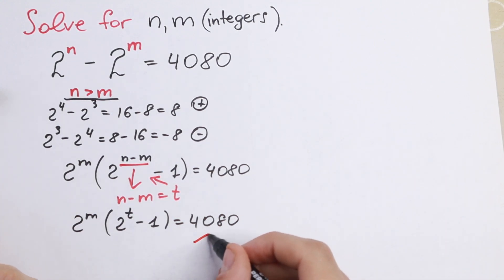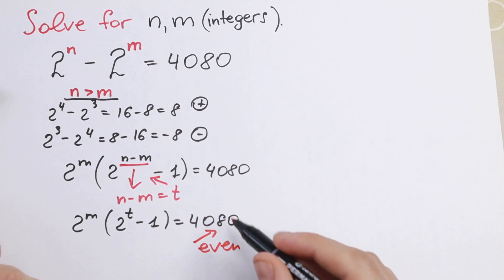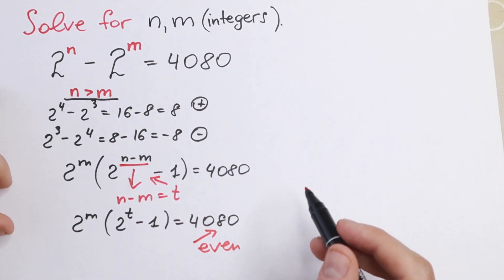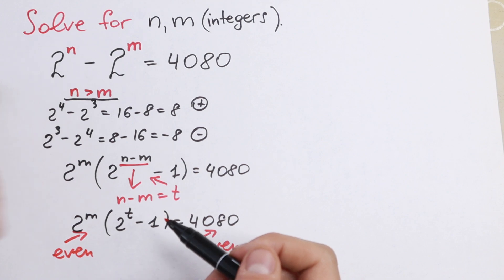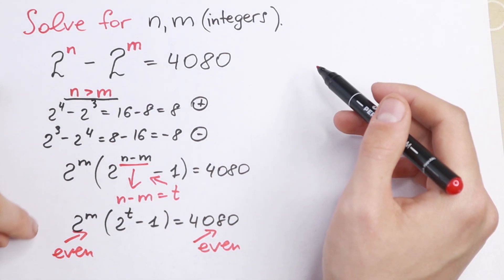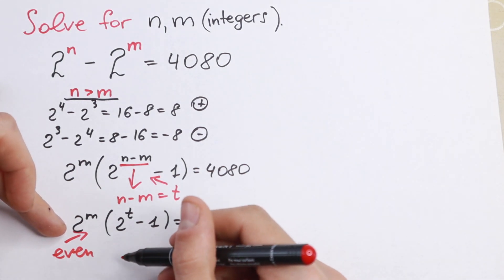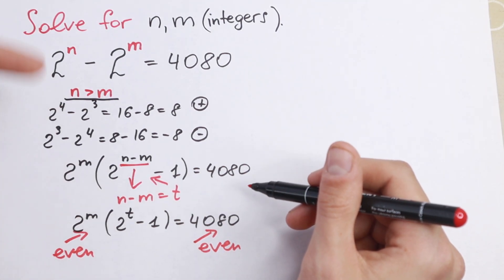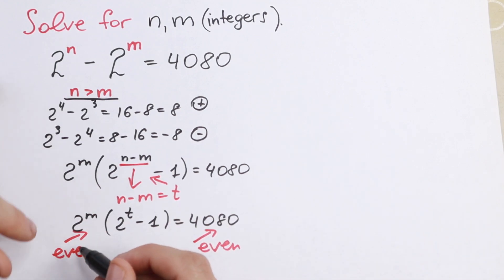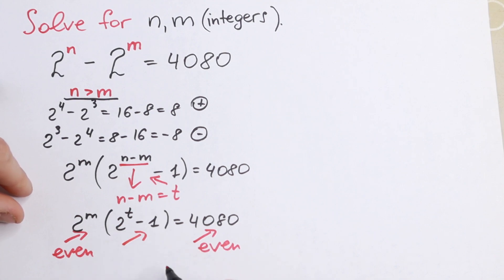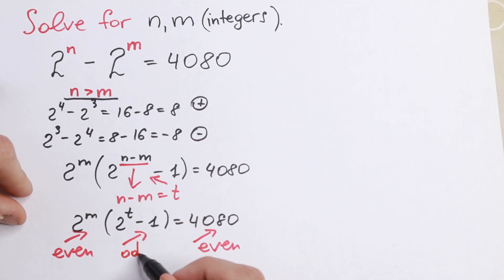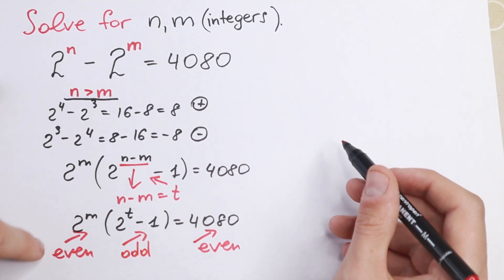Now we need to think about parity. The right side, 4080, is an even number. 2 to the power m is always even for any integer m. And 2 to the power t is also even, but if we subtract 1 from an even number, we get an odd number. So (2^t - 1) is always odd. This means 4080 can be expressed as a product of an even and an odd number.